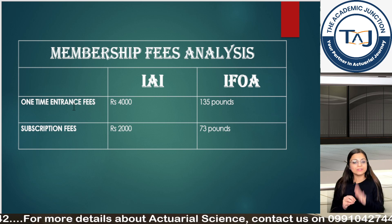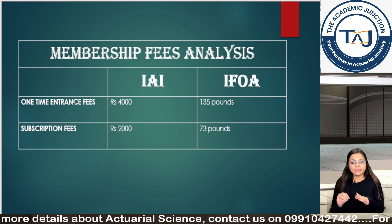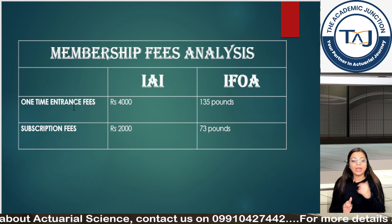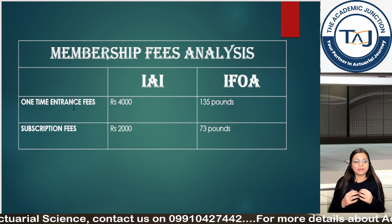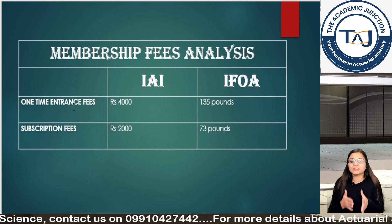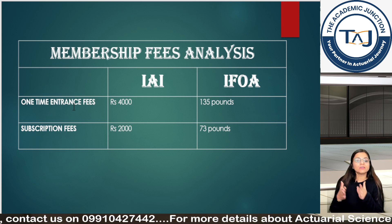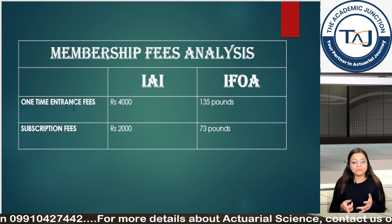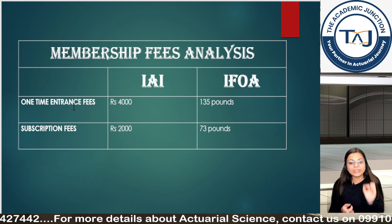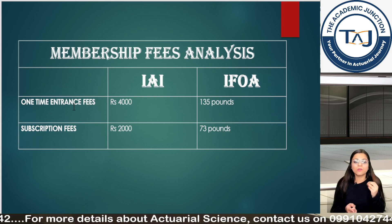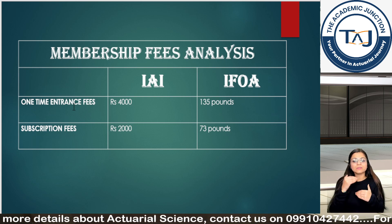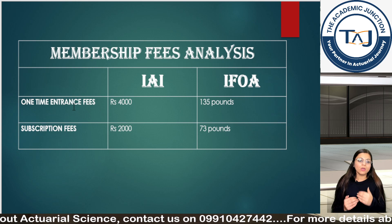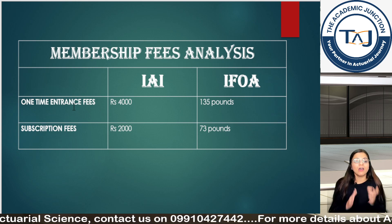Regarding membership: for II, after clearing ACET, you take membership costing around 4,000 rupees. For IFOA, you have two options — give CS1 or CM1 as a non-member exam, or take membership first. IFOA membership costs 135 pounds, which at roughly 120 rupees per pound is around 14,000 rupees. So 14,000 is the one-time membership fee for IFOA; 4,000 is the membership fee for II after clearing ACET.